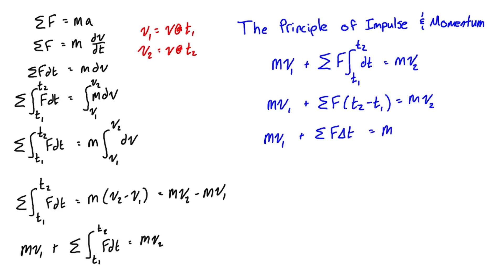You sometimes will see it written this way as well. It's just a simplification where mass and force are both constant, but again, momentum one plus all the impulses is equal to momentum two of our system.